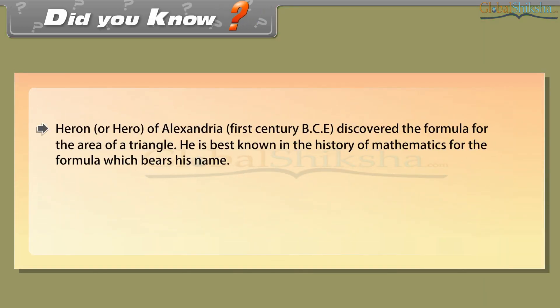Did you know: Heron, or Hero of Alexandria, 1st century BCE, discovered the formula for the area of a triangle. He is best known in the history of mathematics for the formula which bears his name.